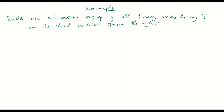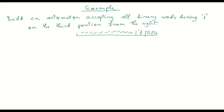In other words, I want to build an automaton that accepts all words that have anything on the last position, anything on the second-to-last position, and a 1 on the third-from-last position — and only such words.